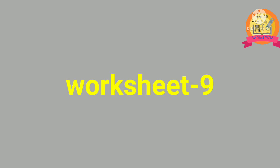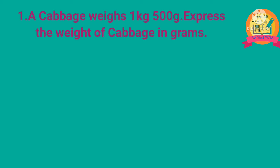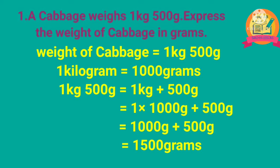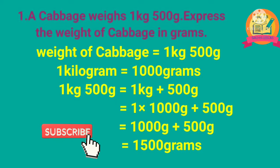Worksheet 9. First problem: a cabbage weighs 1 kg 500 g. Express the weight of cabbage in grams. Solution: weight of cabbage is 1 kg 500 g. As we know that 1 kg is equal to 1000 g. By converting the given weight into grams, we get 1500 g. That is, 1 kg 500 g is equal to 1500 g.